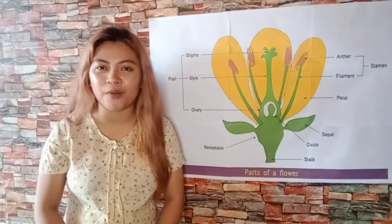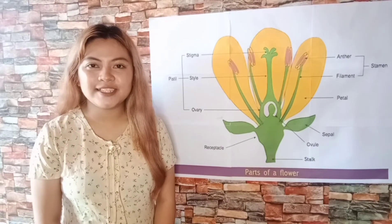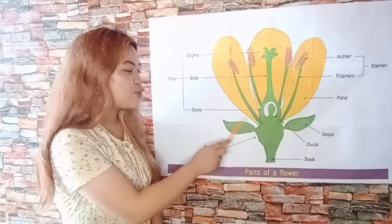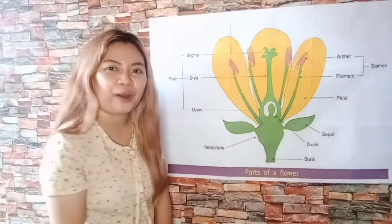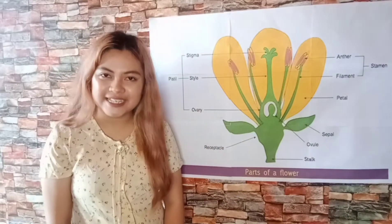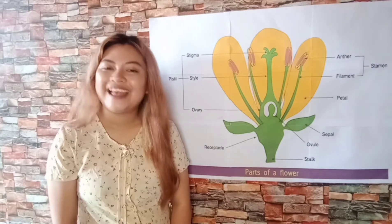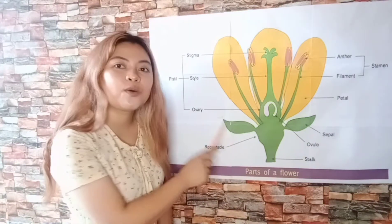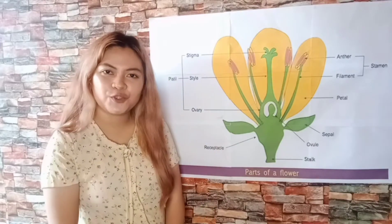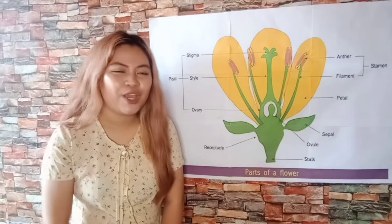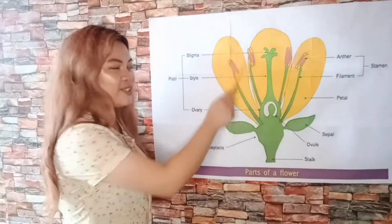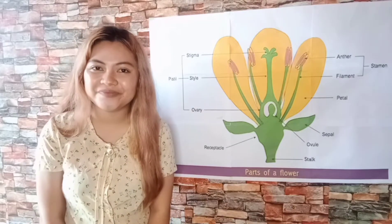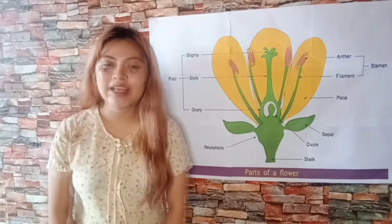Let's discuss the sepal. The sepal is a leaf-like structure found at the base of the flower, and mostly sepals are green in color. The main function of a sepal is to protect the flower during the budding stage and also to provide support to the petals when it is fully grown.